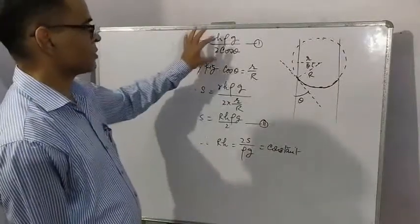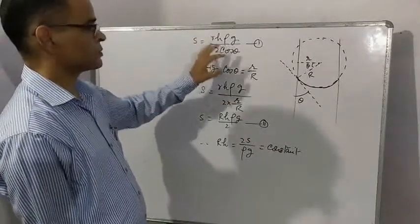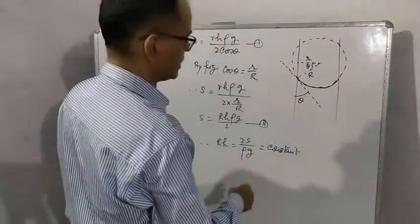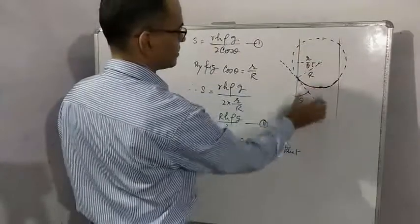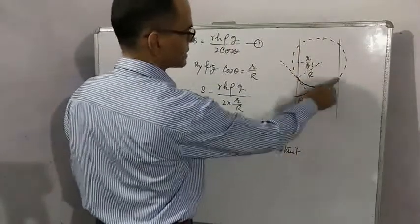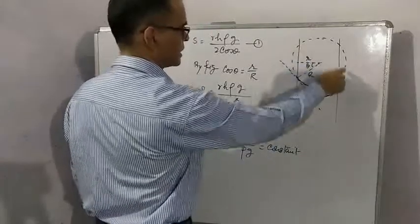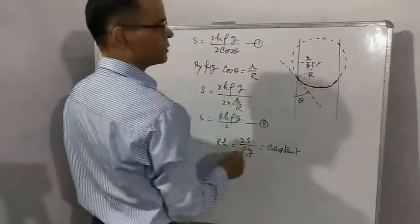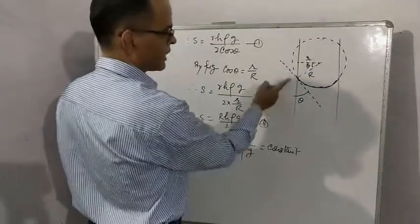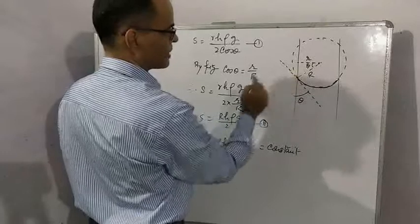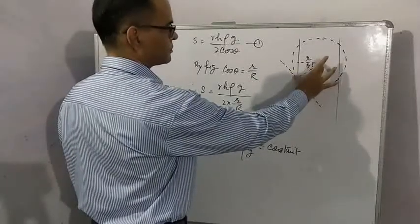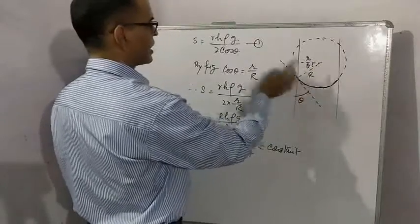Now we are going to convert this formula in terms of radius of curvature of meniscus. See carefully, this is a capillary tube, this is radius of tube. It is meniscus. If meniscus is completed we get a spherical surface and radius of the surface is capital R, called radius of curvature.